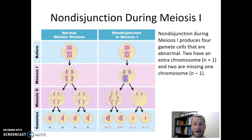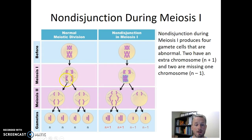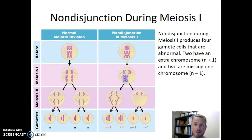Let's look at what happens if non-disjunction occurs, starting with meiosis one. In this diagram we have two columns. The first column represents the outcome of normal meiosis where disjunction occurred correctly at every step. During meiosis one the homologous chromosomes pull apart, then during anaphase of meiosis two the sister chromatids separate. At the end of meiosis we create four gametes that each have one copy of each chromosome — they are haploid, represented by the letter N, meaning one of each kind of chromosome.